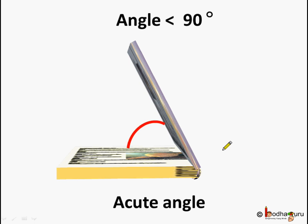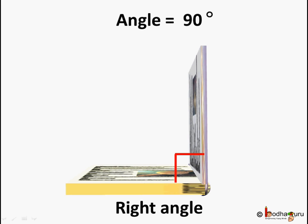Now here the book is partially opened and the turn is partial — it is less than 90 degrees. So we can say the angle made here is an acute angle. Now we have opened the book in such a way that it is half opened, or the two pages are making a right angle. So the angle here is equal to 90 degrees, which is a right angle.